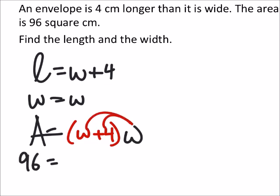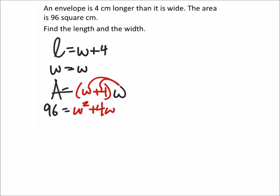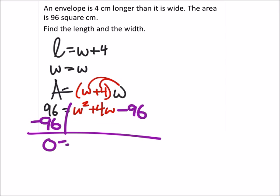So distributing this w, we get w squared plus 4w equals 96. So we should solve so that we have a zero on its own side of the equal sign by subtracting 96 from both sides. And we get zero equals w squared plus 4w minus 96.